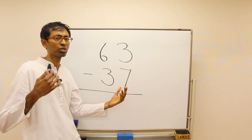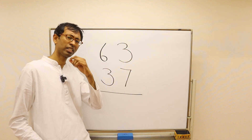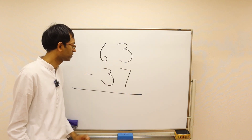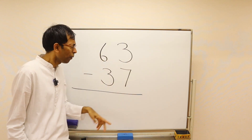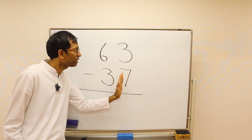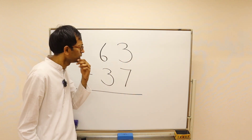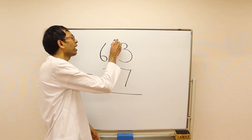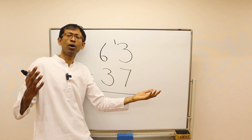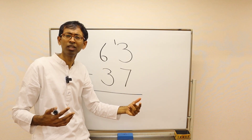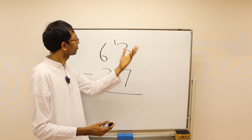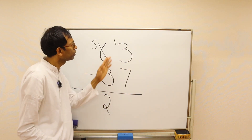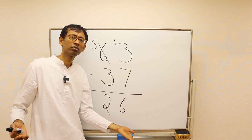Now we see how to solve this problem from left to right — it's a different level of perception. We start from the left: 6 minus 3 is 3, but before we write down 3, we check if the next digits need any help. They do need help, so we give 1 away — we don't like borrowing, we like to give, because knowledge makes us rich. So this becomes 5, and 5 minus 3 is 2, and 13 minus 7 is 6.